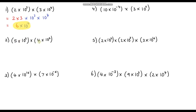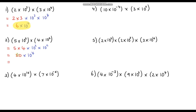Question 2: I'm going to rearrange, grouping together the 5 and the 4, then multiply the powers of 10. 5 times 4 is 20. Then 10 to the power 2 times 10 to the power 2 is 10 to the power 4. But this isn't our final answer because 20 is not between 1 and 10. So we divide by 10: 20 divided by 10 is 2. And we multiply the power by 10, so 10 to the power 4 becomes 10 to the power 5. Our final answer in standard form is 2 times 10 to the power 5.